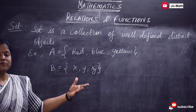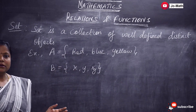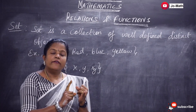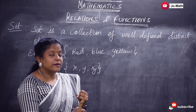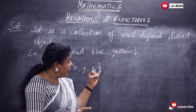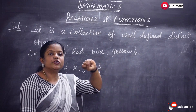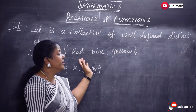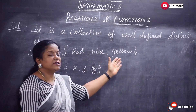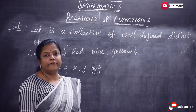Now let us see the types of sets. What are the types? First is finite set. If the set has a finite number of elements — that is, if you can count the number of elements within the set — then it is a finite set. For example, the set here has three elements, so the number of elements is three. It is countable, so it is a finite set.